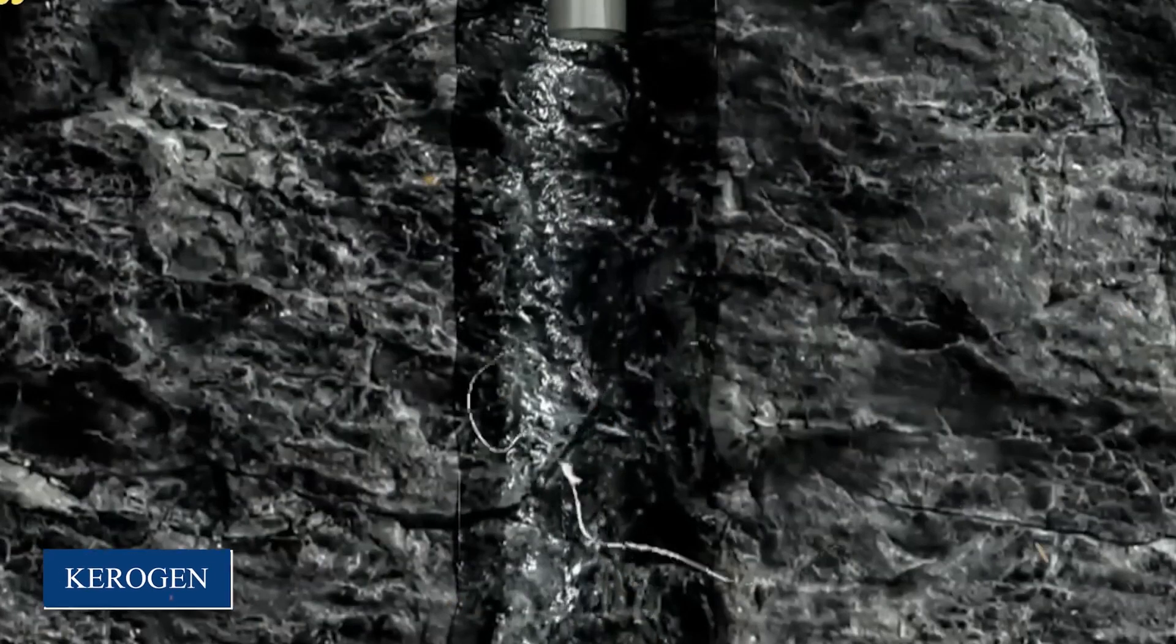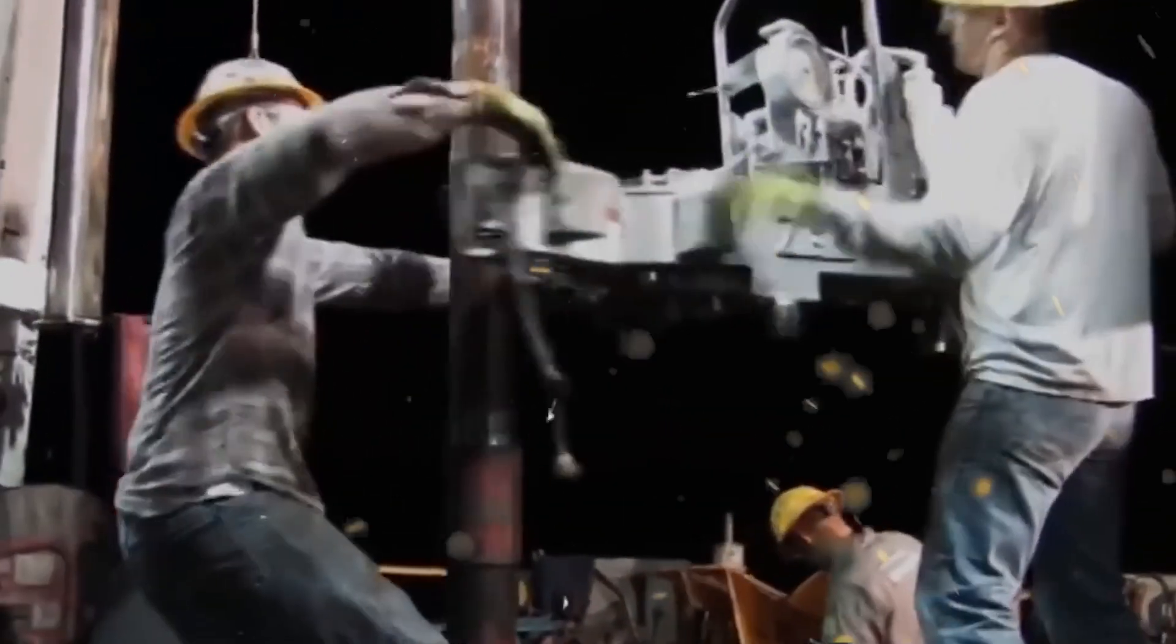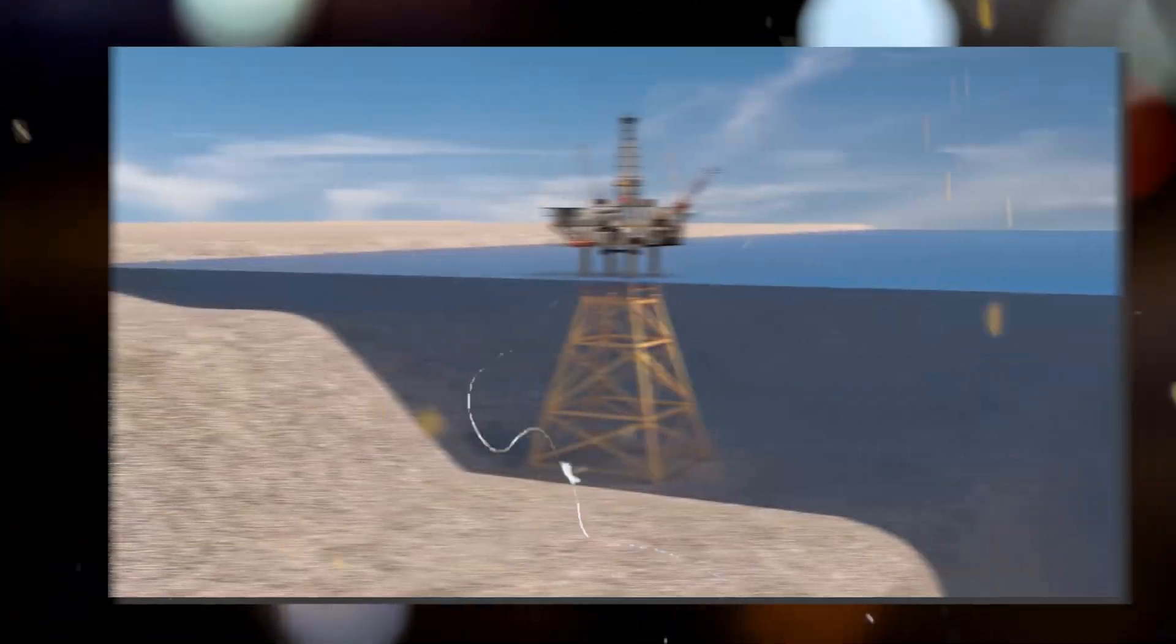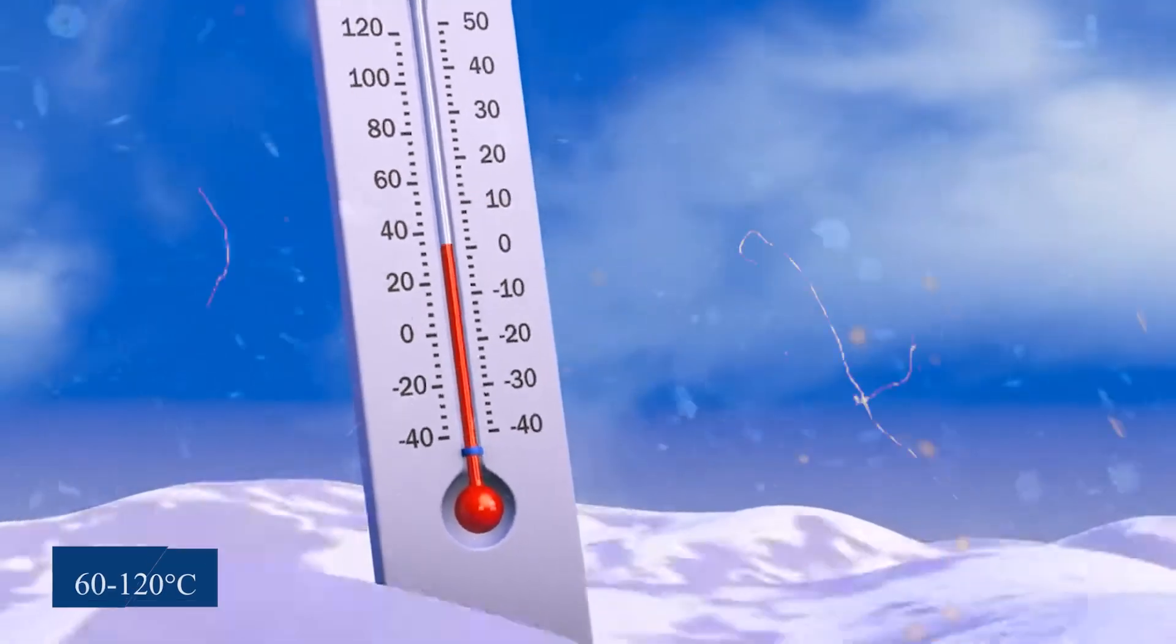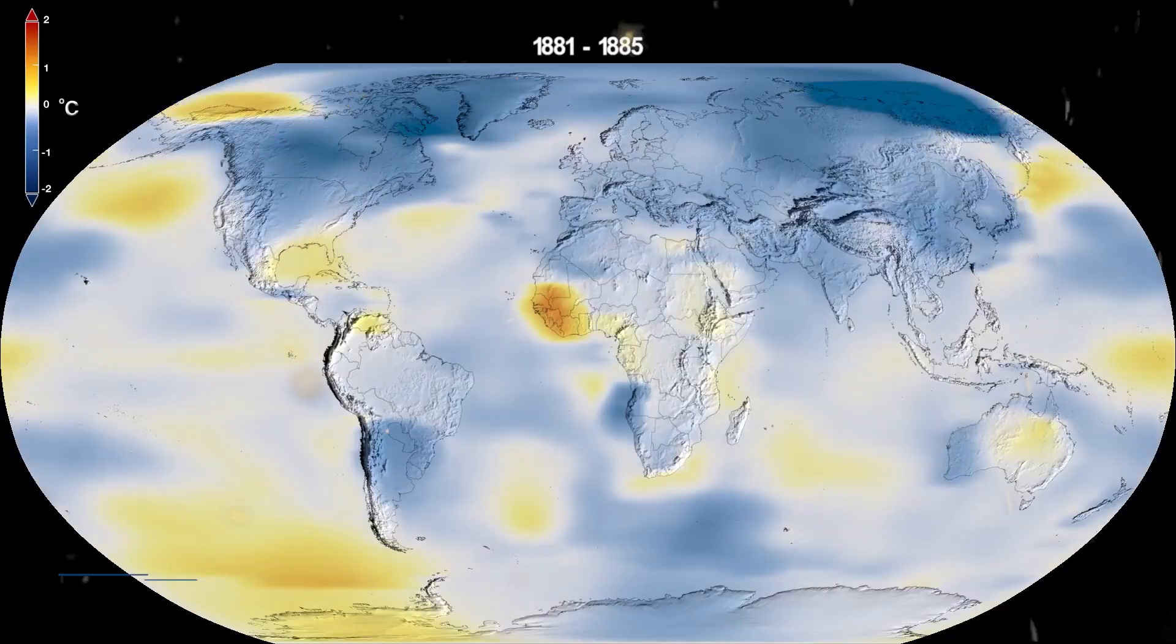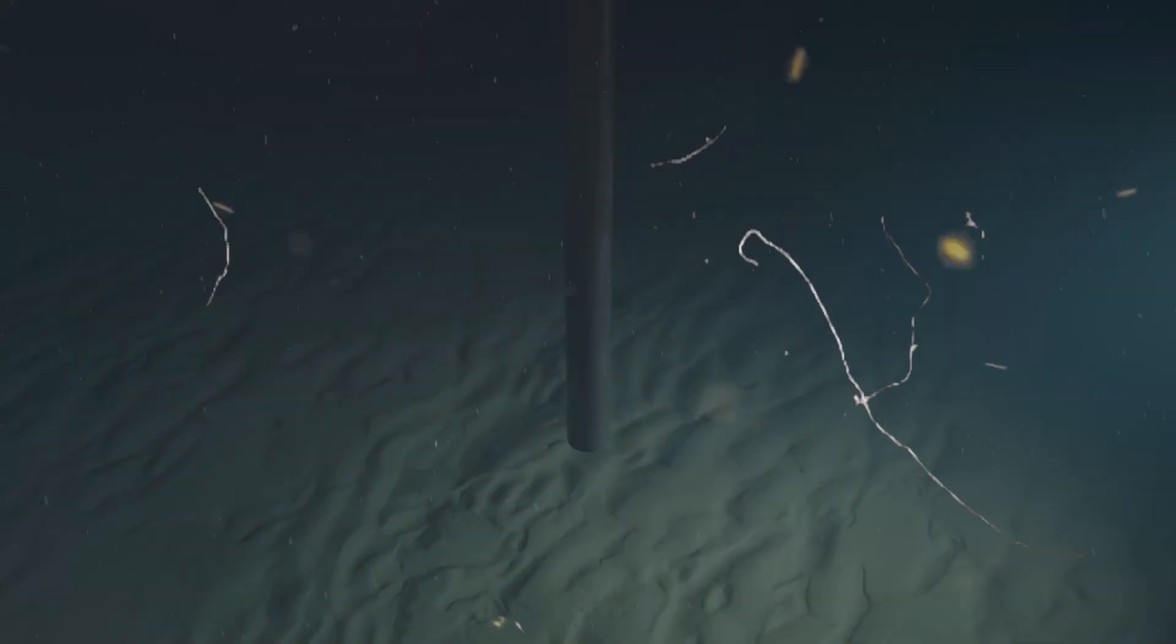Over time, layers of sediment, like mud and sand, cover their remains. As more layers pile up, the weight and pressure compress the organic material, turning it into a dark, gooey substance called kerogen. This process takes millions of years and happens in areas where there's little to no oxygen, like deep underwater or underground. As the temperature increases with depth around 60 to 120 degrees Celsius, 140 to 248 degrees Fahrenheit, and pressure mounts, the kerogen undergoes further changes.